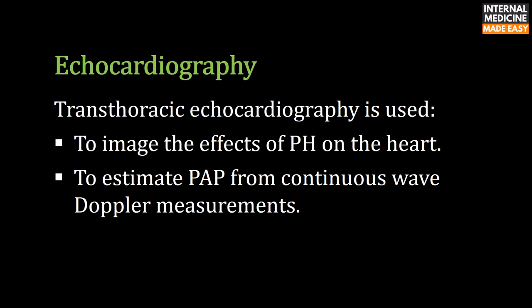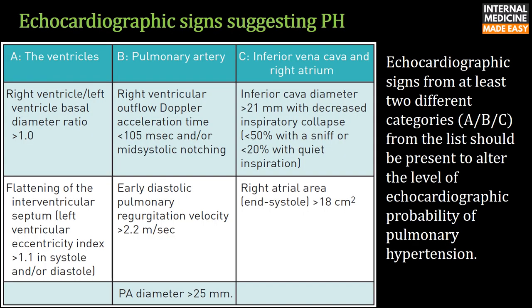Transthoracic echocardiography is used to image the effects of pulmonary hypertension on the heart and to estimate pulmonary arterial pressure from continuous wave Doppler measurements. Signs from at least two different categories should be present to alter the level of echocardiographic probability of pulmonary hypertension.